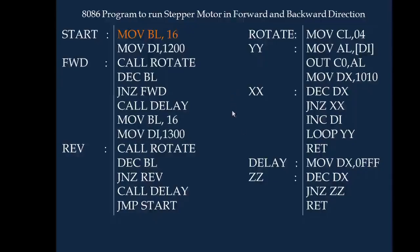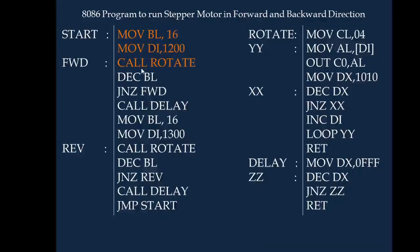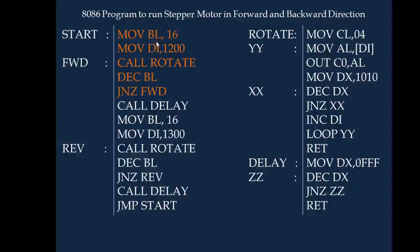If one cycle is 8, 4, 2, 1 then we will execute 16H cycles. The data starting at address 1200 is moved to the destination index register and the subroutine rotate is called. This ensures one complete cycle of 8, 4, 2, 1 is sent to the stepper motor. Next BL is decremented from 16 to 15. If it is not 0 we call rotate again. This continues executing for 16 hex times — 16, 15, 14, 13, 12, 11, 10, F, E — and so on until all cycles complete.